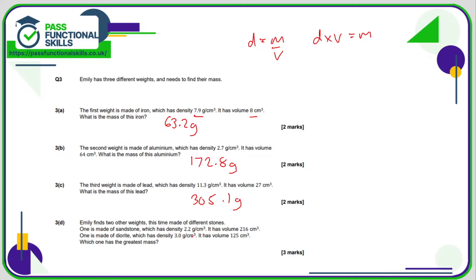Emily finds two other weights made of different stones. One is made of sandstone - we've got the density and the volume, so the mass is 2.2 multiplied by 216, which comes to 475.2 grams. The other is made of diorite, with a density of 3 and a volume of 125, giving a mass of 375 grams. So which has the greatest mass? That is clearly the sandstone.